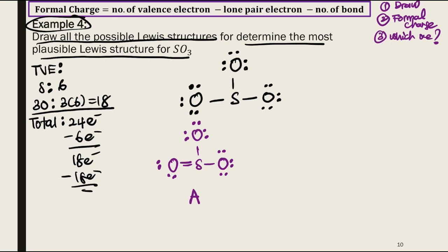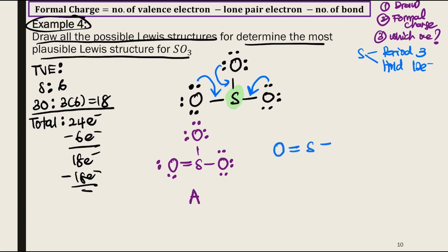Since sulfur is in Period 3, it can hold more than 8 electrons — it has an expanded octet and can hold a maximum of 12 electrons. We move lone pairs from each oxygen atom so that sulfur forms three double bonds. This second Lewis structure is Structure B for SO₃.